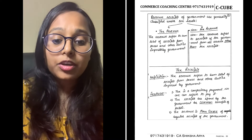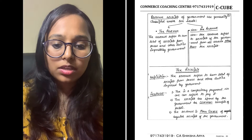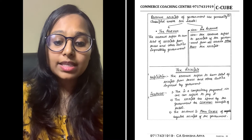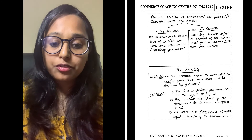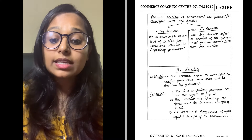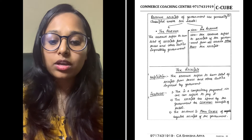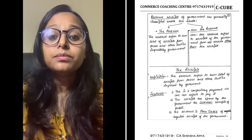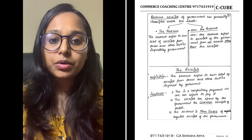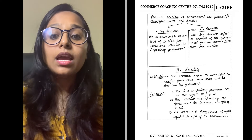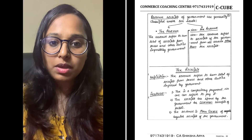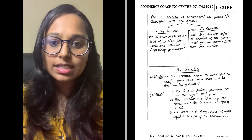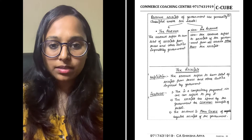Now let's see the notes. Revenue receipts of the government are generally classified under two heads. Number one is tax revenue. Tax revenue refers to the sum total of receipts from taxes and other duties imposed by the government. We include 'duties' because we have customs duty, which is called a duty rather than a tax.